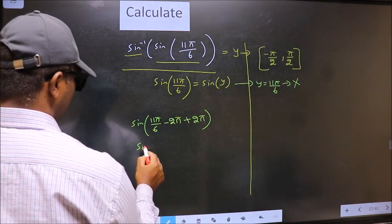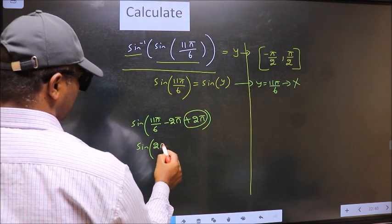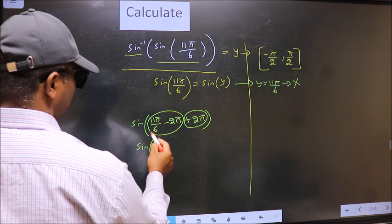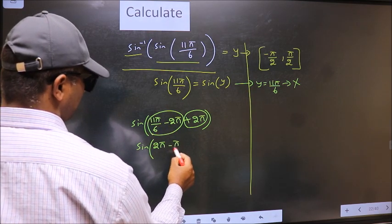Now 2 pi I write at the start. This you calculate. 11 pi by 6 minus 2 pi. We get minus pi by 6.